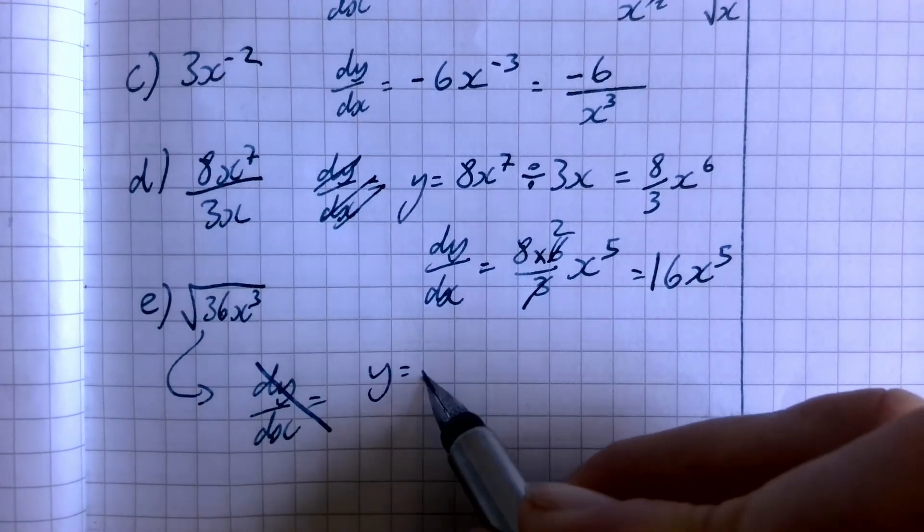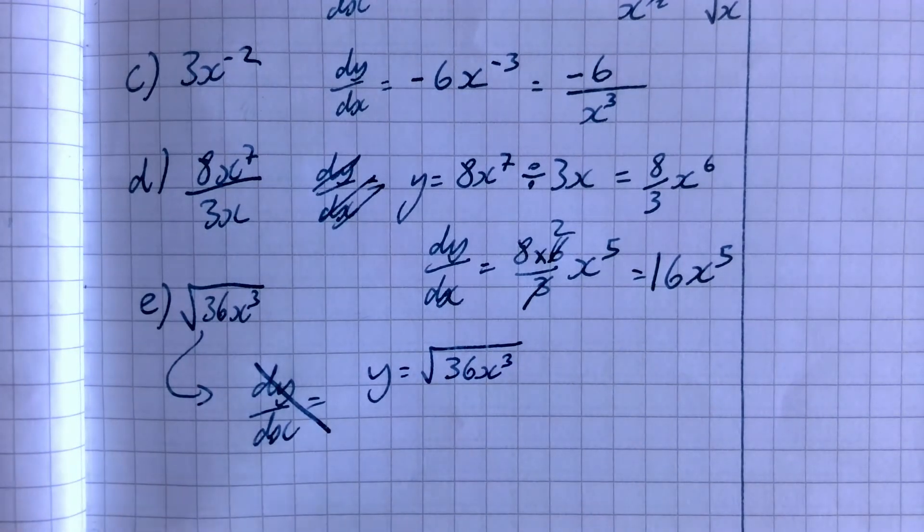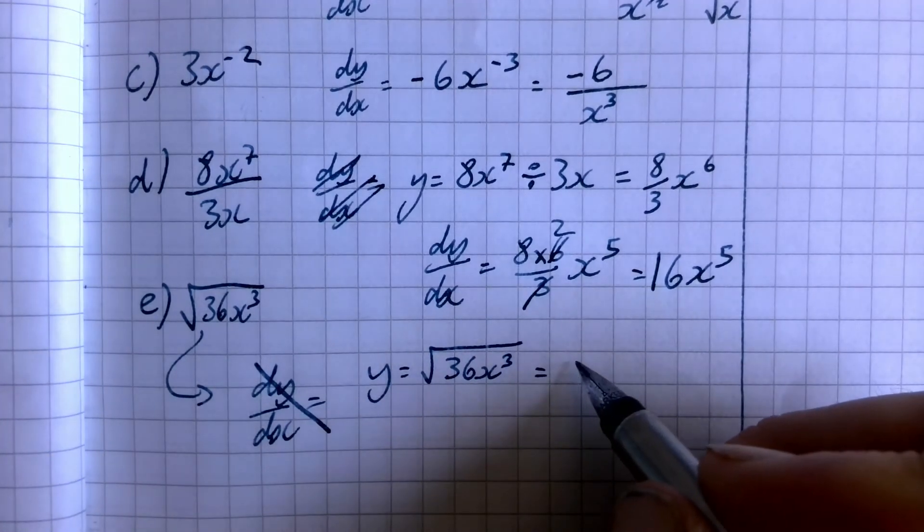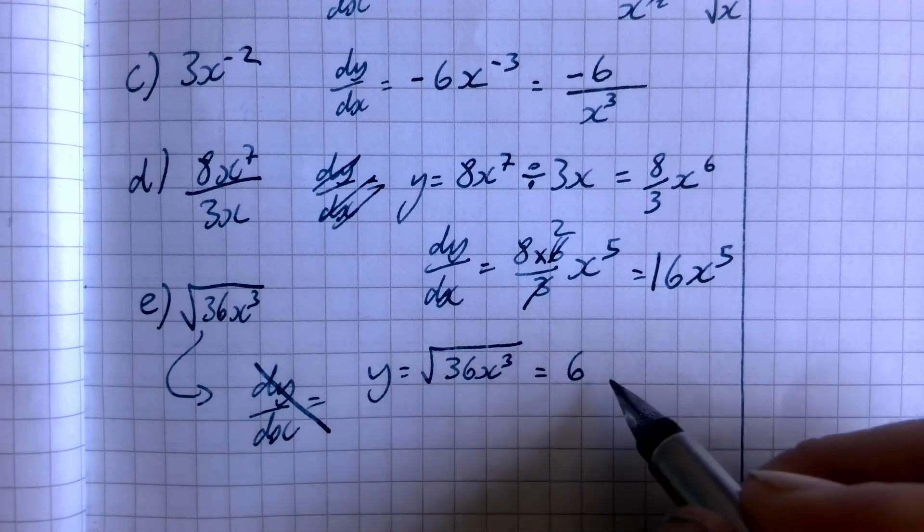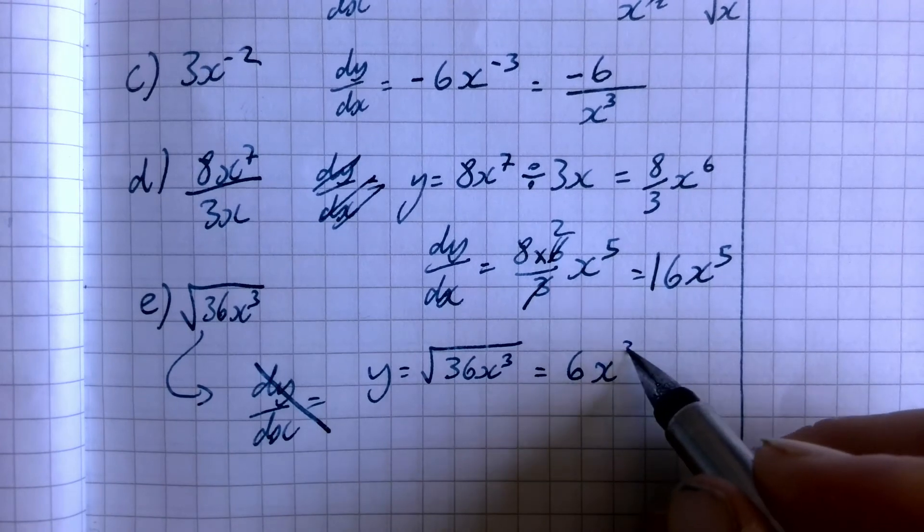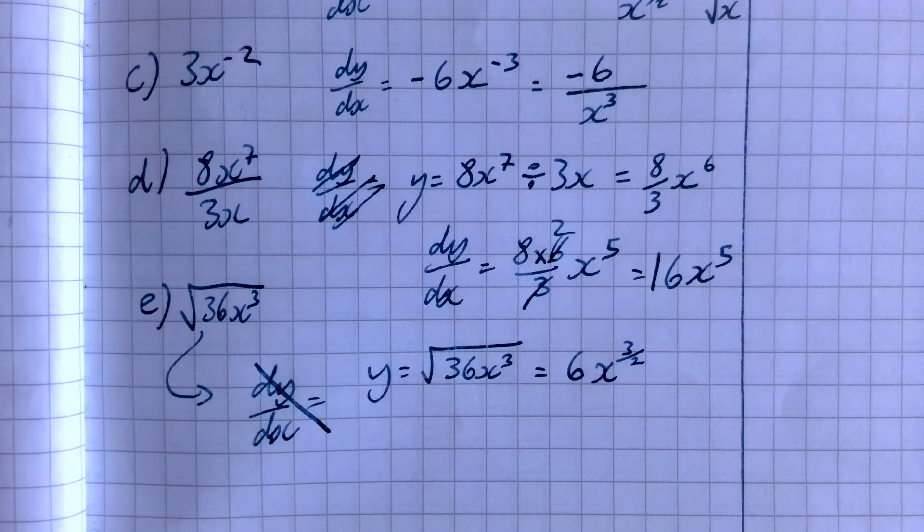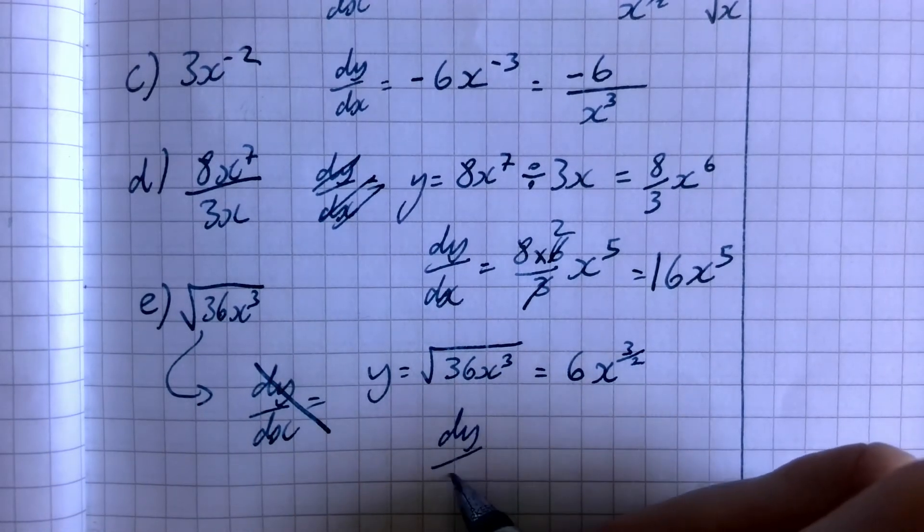And say, right, y is equal to root 36 x cubed. And then I'm going to say I know the square root of 36 is six. And the square root of x to the power three will be the roots bringing the fraction element that will be x to the three over two. Now when I differentiate that, I'm going to do six times three over two x and then I'm going to take one away from three over two, which leaves me with one half.